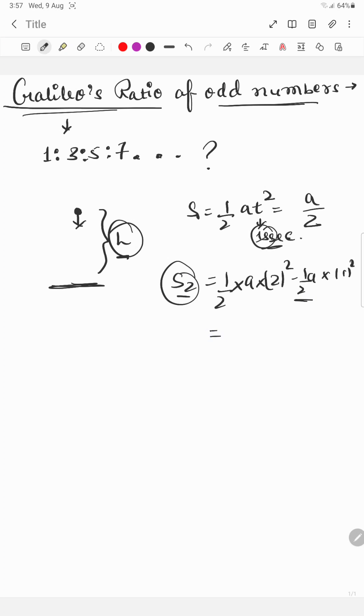So here it will be 3a by 2. Now in the third second, not in 3 seconds, distance covered in 3 seconds minus distance covered in 2 seconds will be the distance covered in the third second, so that will be 5a by 2, and so on.